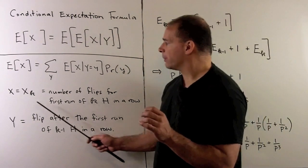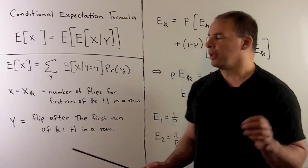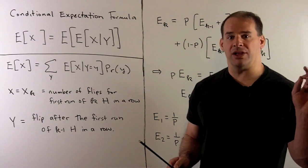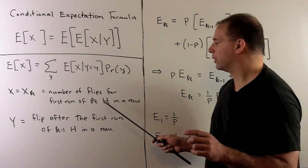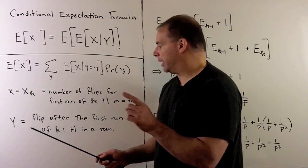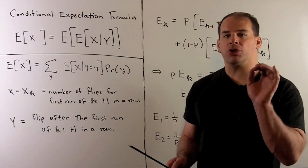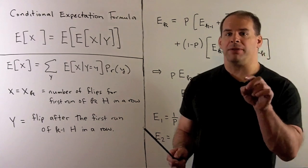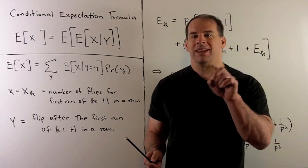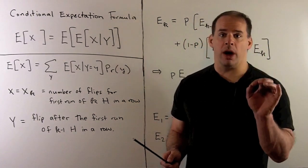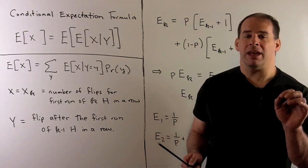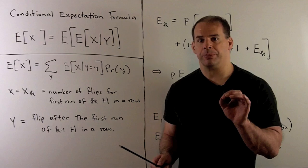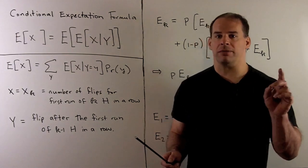In our case, our x is going to be x sub k — the number of flips to get to our first run of k heads in a row. Our y is going to be the flip that occurs after our first run of k minus 1 heads in a row. Note that flip: if it's a heads, we have what we want — k heads in a row. If we get a tails, then we just have to start over from scratch.